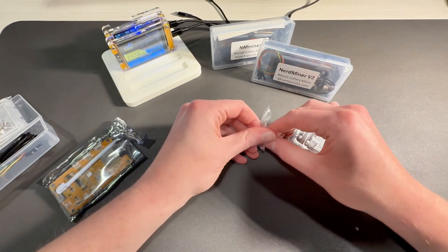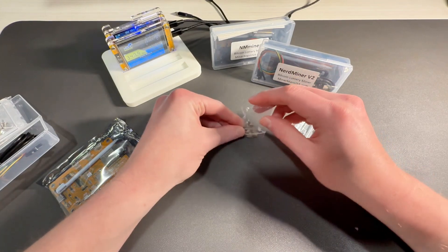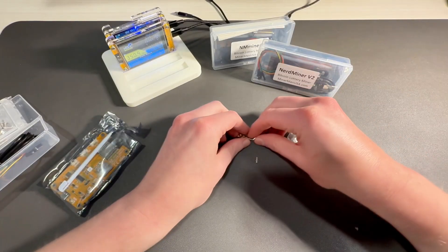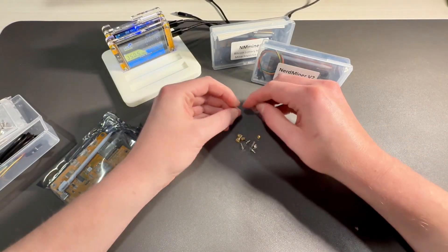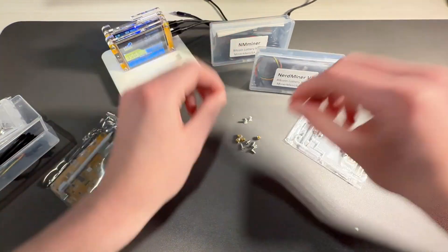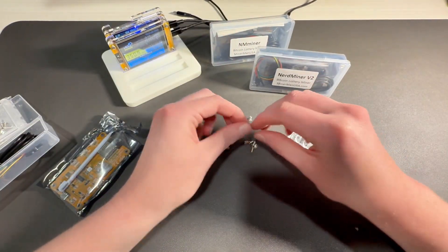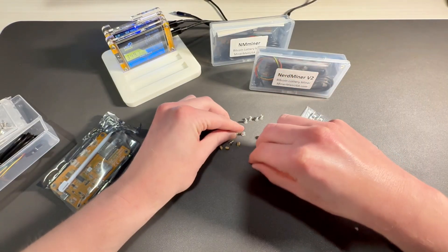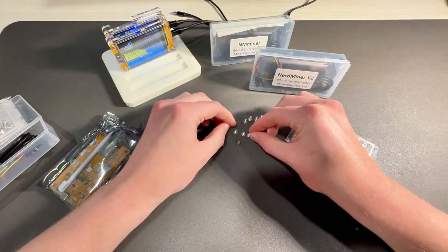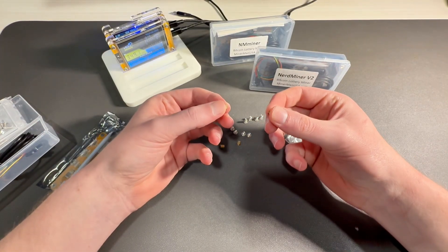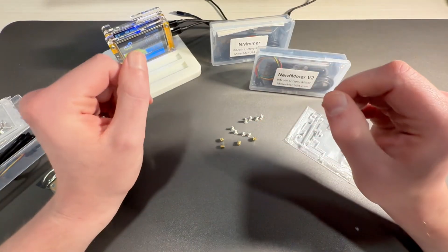Then we're going to take a look at the parts. Inside the parts baggie there should be four long screws and four short screws, and there should also be four brass spacers.